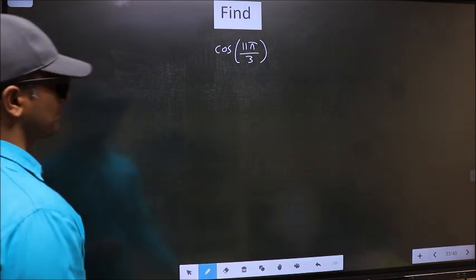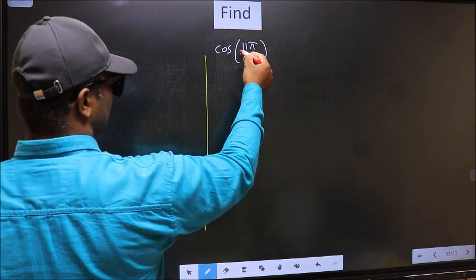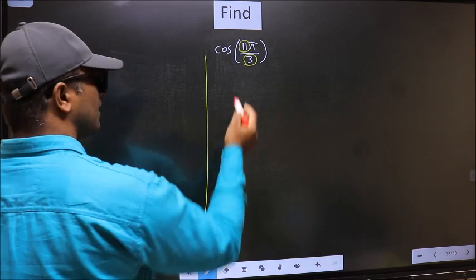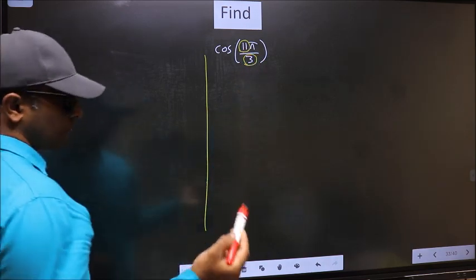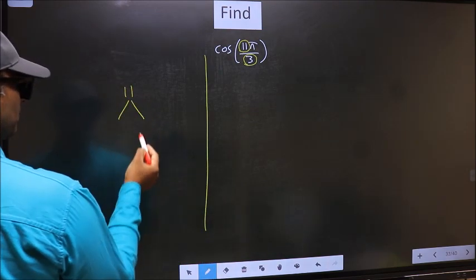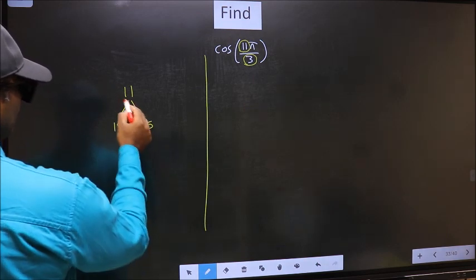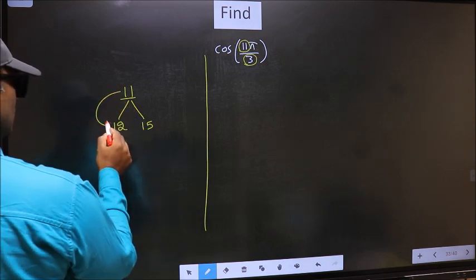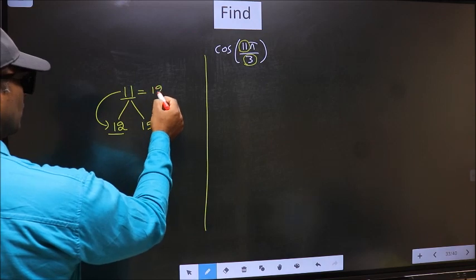See. In the denominator, we have 3. In the numerator, 11. Now you should check, 11 is close to which multiple of 3. What I mean is 11 and here you write multiples of 3. That is 12, 15. Now 11 is close to which multiple? This is close to 12. So now 11 should be written as 12 minus 1.